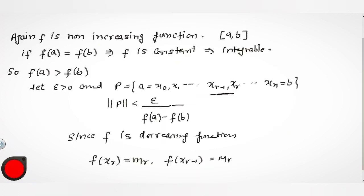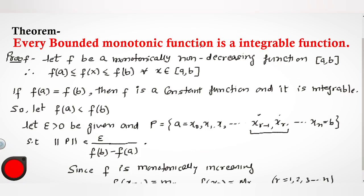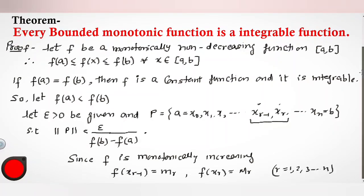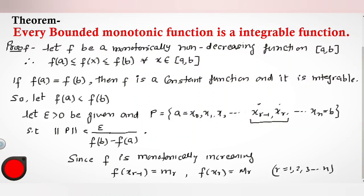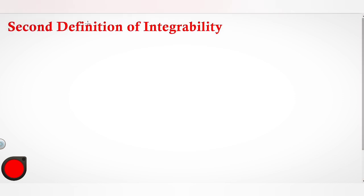Before we talked about that every bounded monotonic function must be integrable. And now we are talking about our second definition of integrability. Second definition of integrability means you have to use Riemann sums. So we will state this.